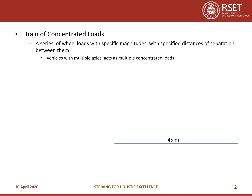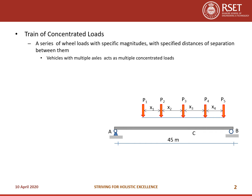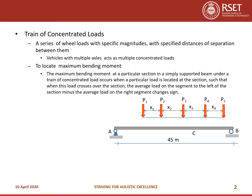The distance between the wheels is specified and constant, and those loads will have some specific magnitudes. Let us consider beam AB with a train of loads P1 to P5 acting at distances X1, X2 up to X4. To locate the maximum bending moment, you need to follow a procedure.